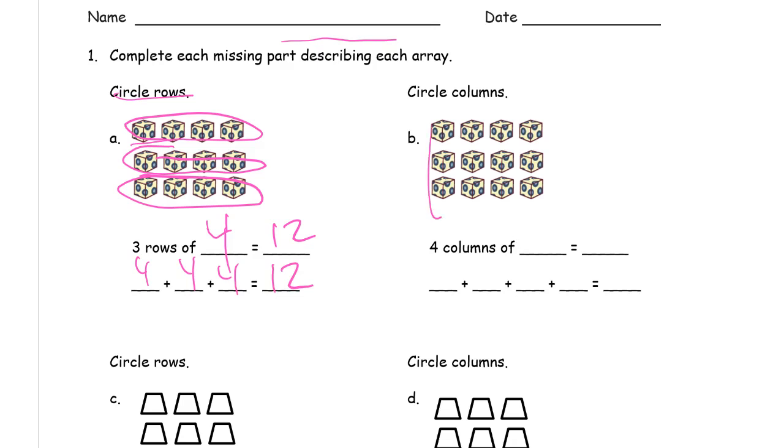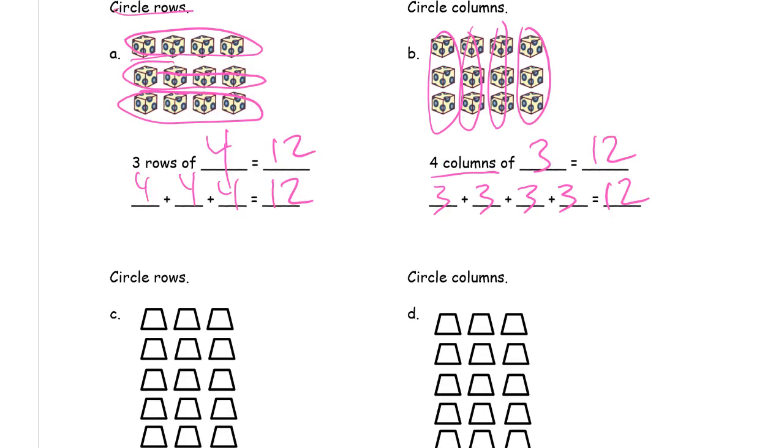Now over here, we're circling columns. Now you'll notice that there's three in each column. There's four columns of three. That's 12, so we need four threes. 3 + 3 + 3 + 3 = 12. Doesn't it look the same, though? It is.